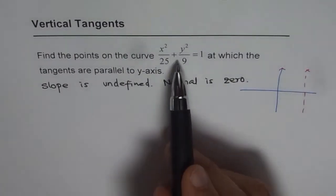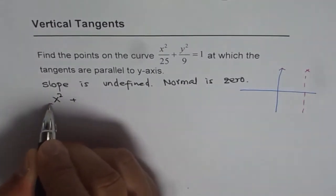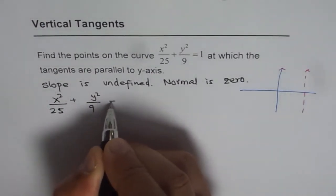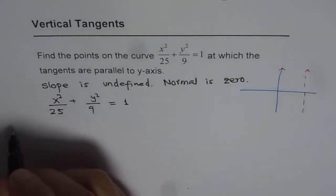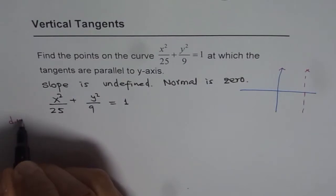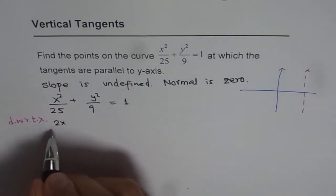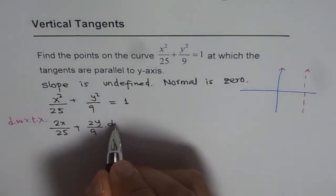Now undefined slope, so let's find the derivative. We are given a function which is x squared over 25 plus y squared over 9 equals 1. Now let's find derivative for this function with respect to x. So if we do that we get 2x over 25 plus 2y over 9 times dy/dx equals 0.